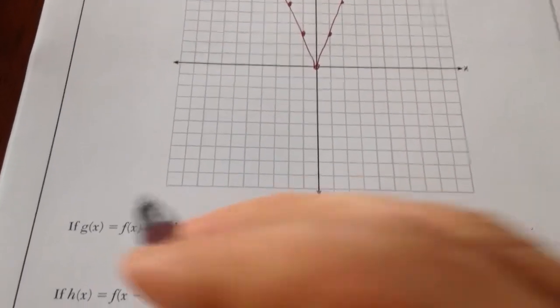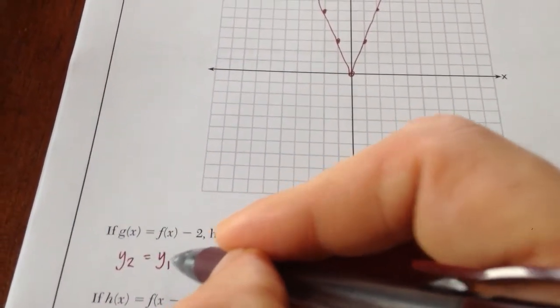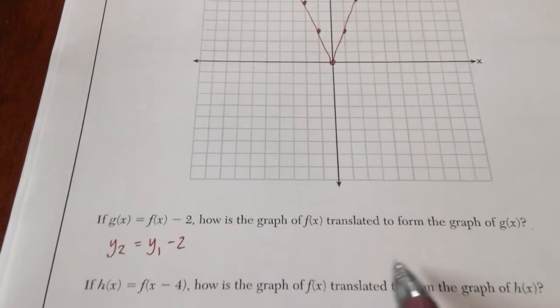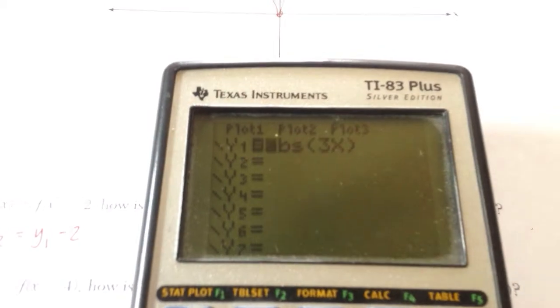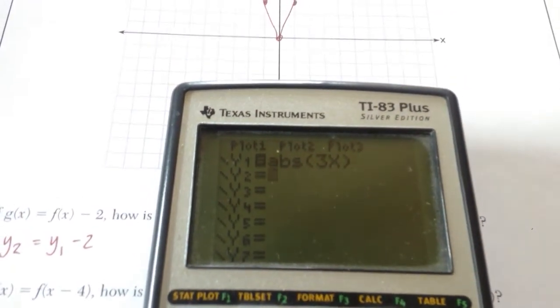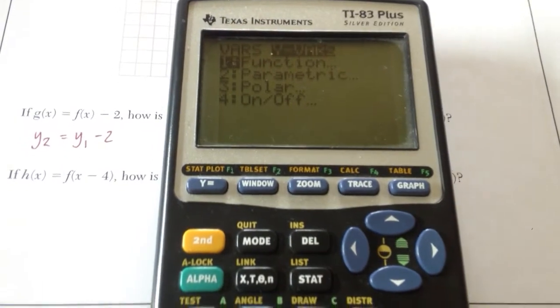Now it says if, basically if y2 is the same as y1 minus 2, how is the graph translated? Okay. So what you can do for yourself is you can go to your calculator. You can go to variables, V-A-R-S, scroll over to y vars, y variables, function.